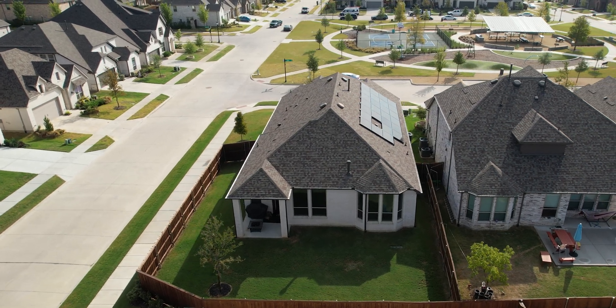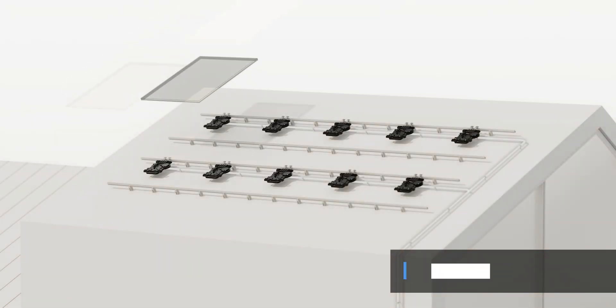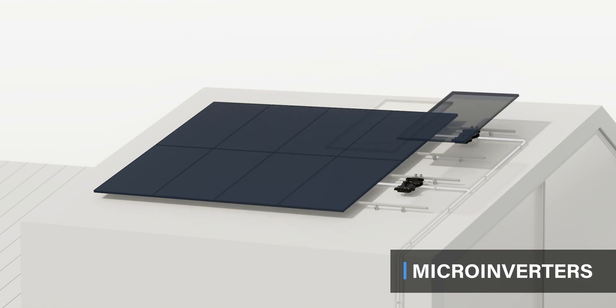String inverters are best for houses that receive full sunlight and have more simplistic roof styles. They are cost effective and have been used for decades. But if you want to add more panels later on, it will require a separate string inverter and could be more difficult.